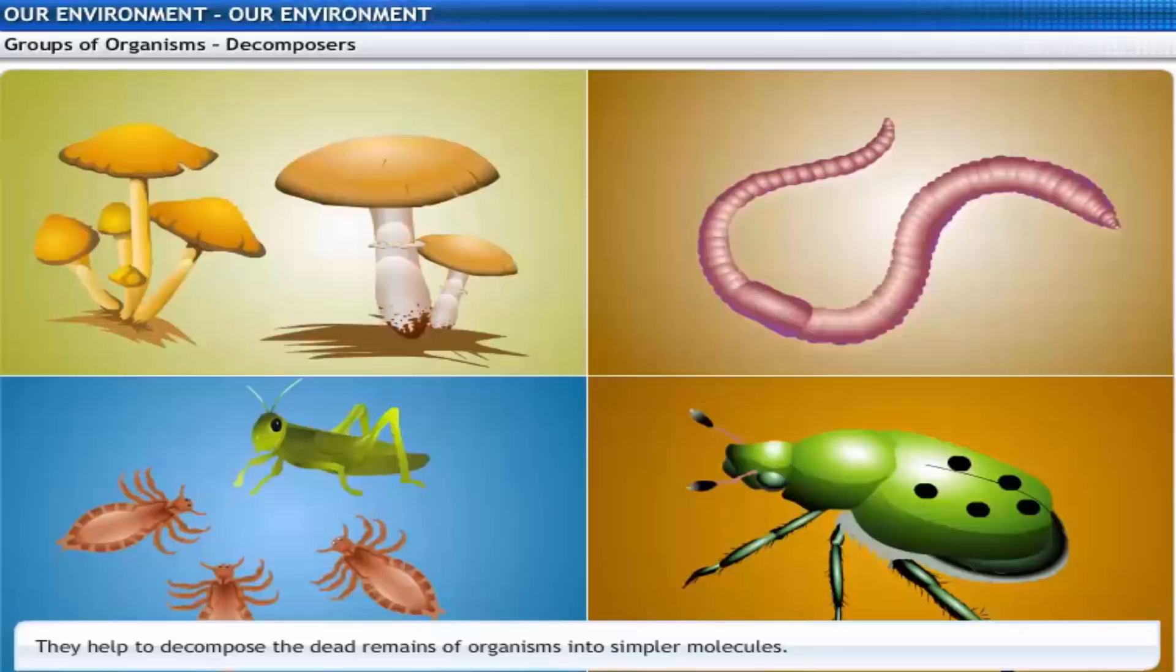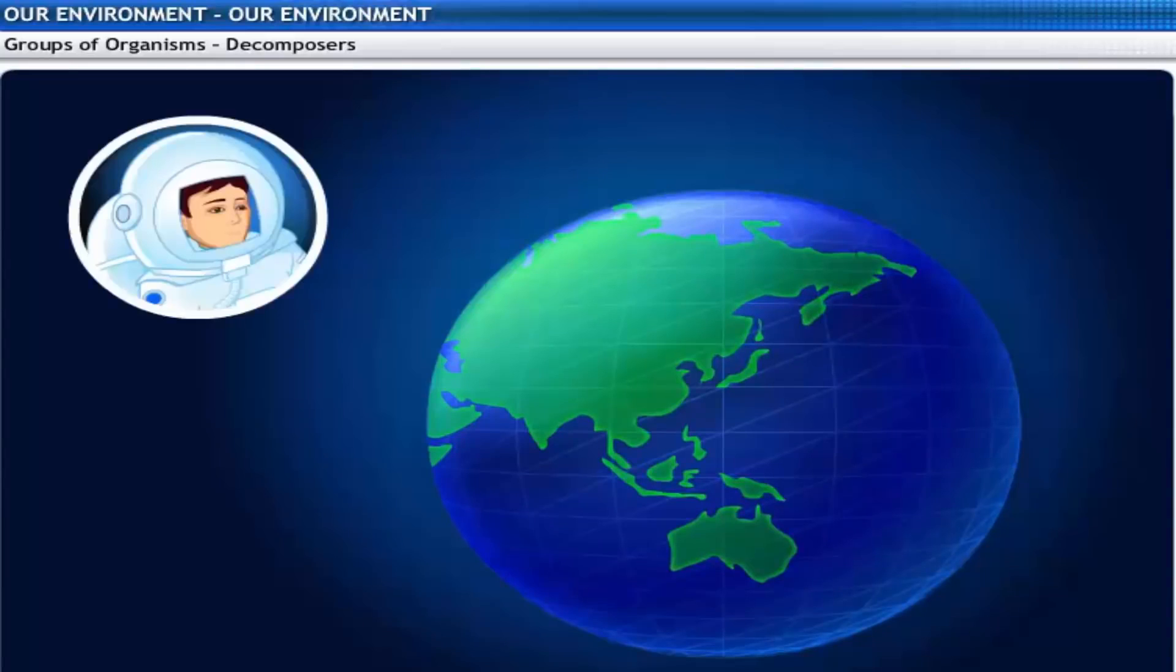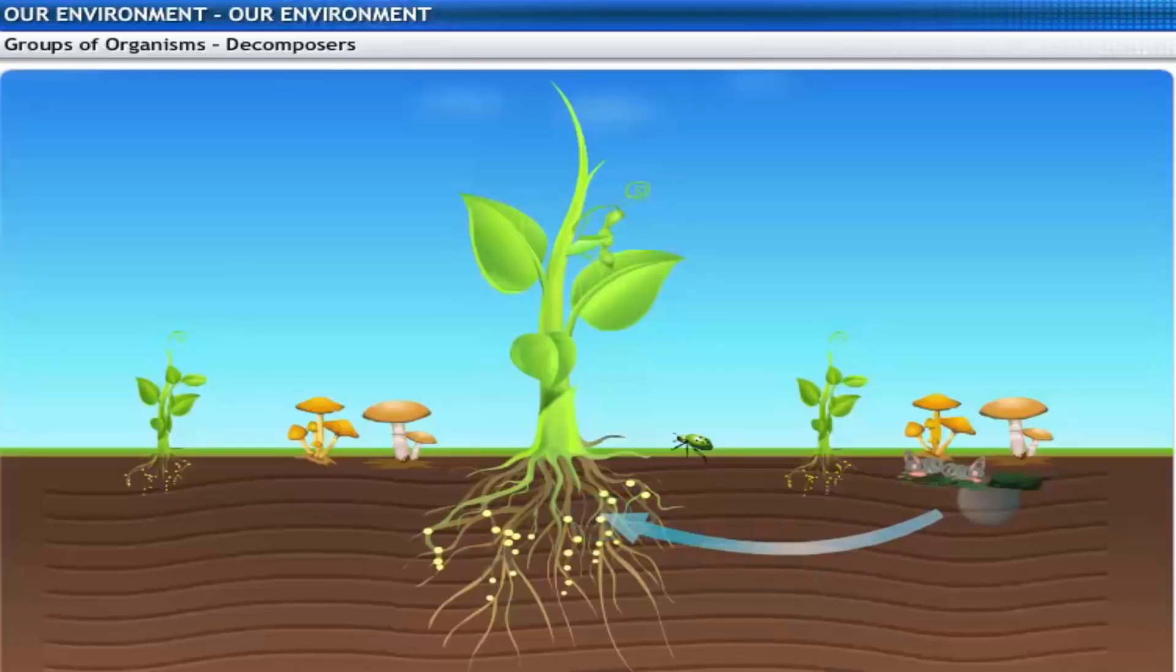Decomposers help to decompose the dead remains of organisms. In the process, complex molecules are broken down into simpler molecules. If they decompose the dead remains, how does it help the ecosystem? The decomposed material is used up by other organisms, primarily plants, as nutrients for their sustenance.